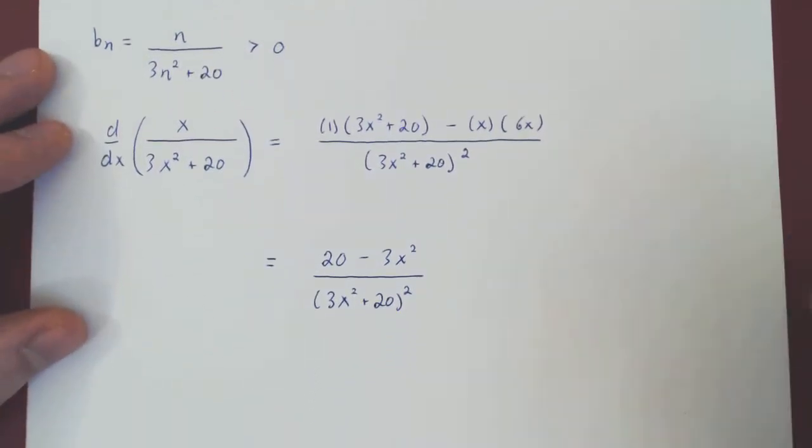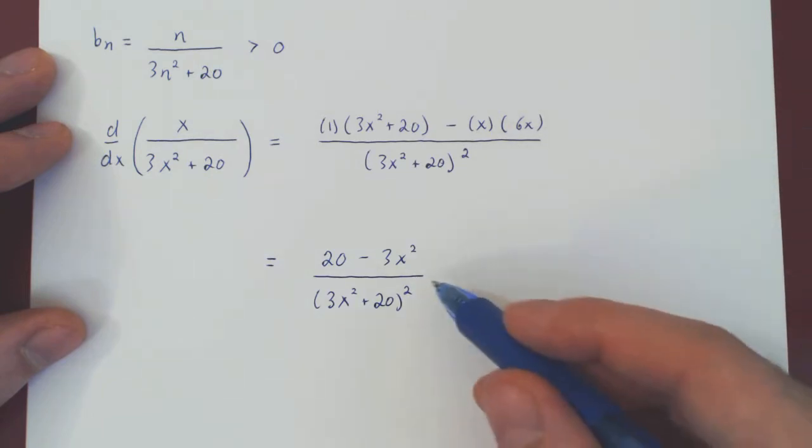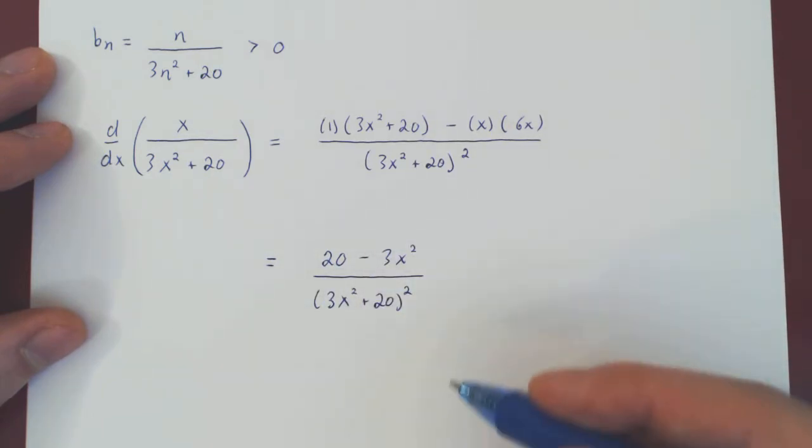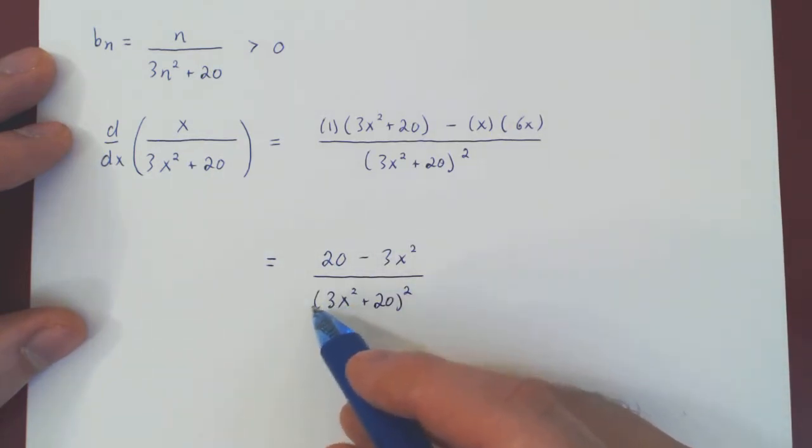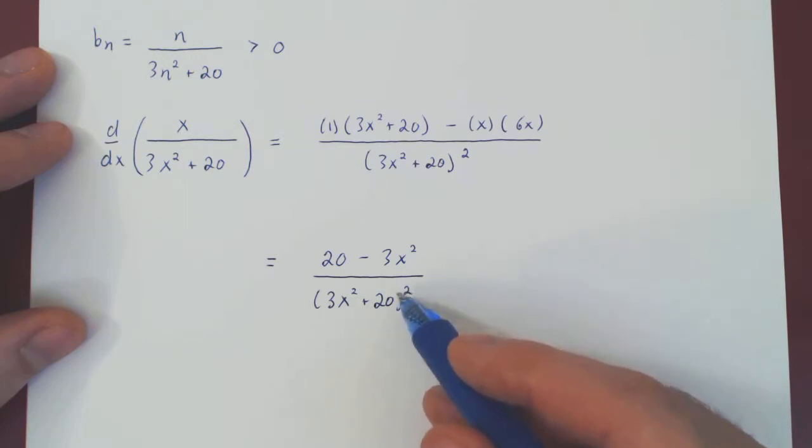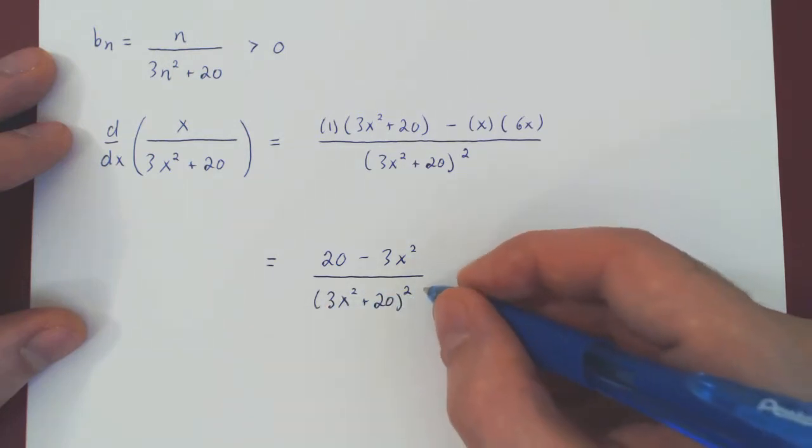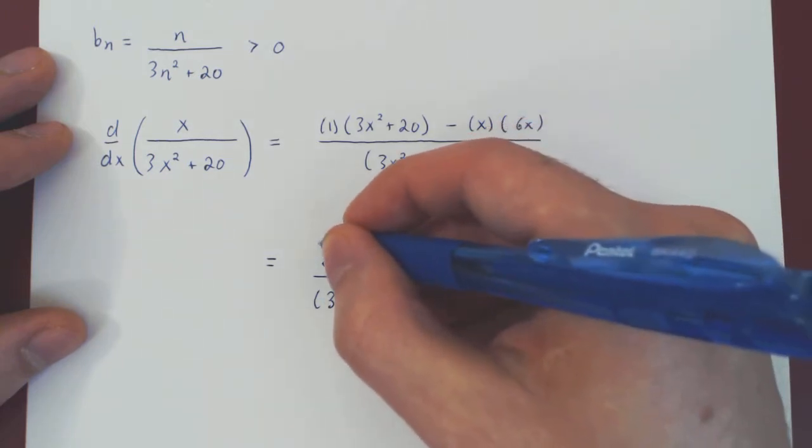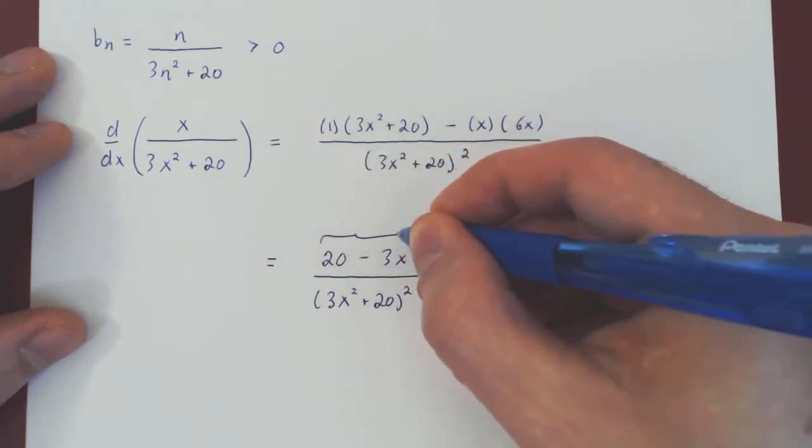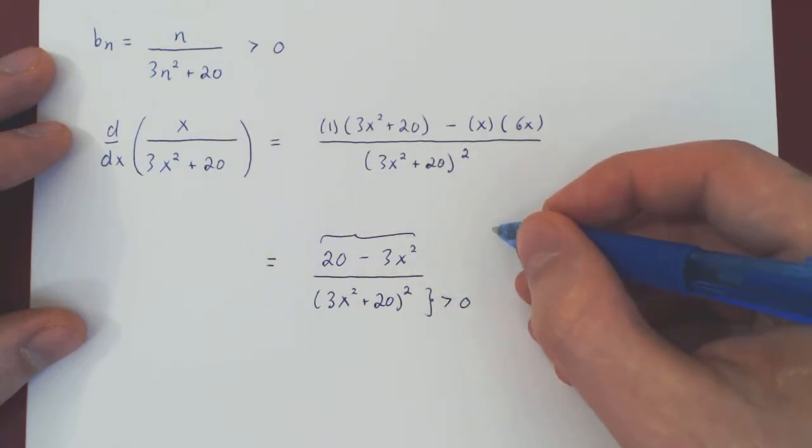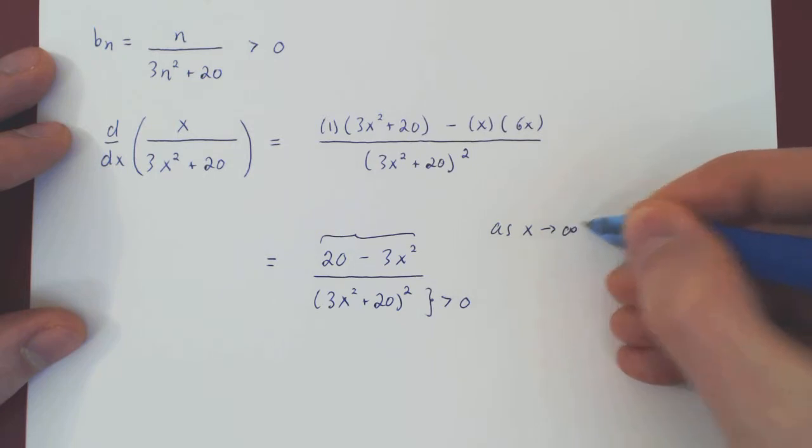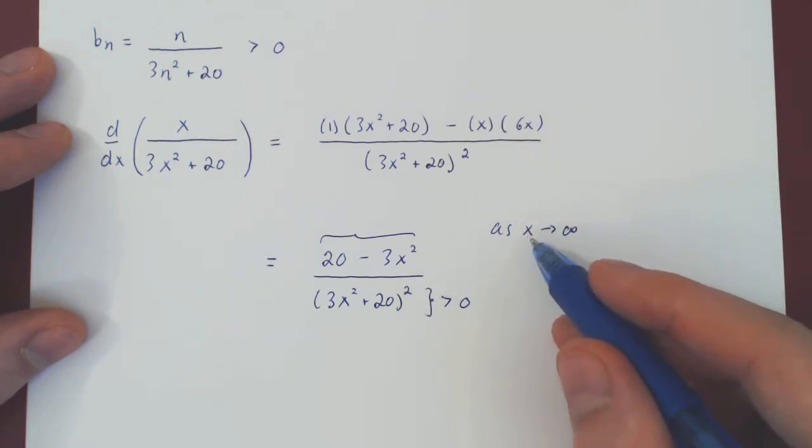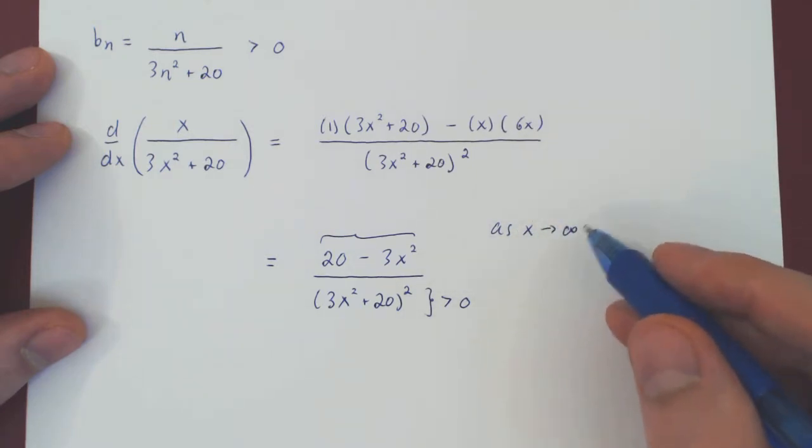And now we're asking, if x is large enough, will the derivative be negative? Well, if you look at your denominator, it's a square, so it's always positive. So this will not affect the sign of the fraction. And now look at your numerator. As we let x approach positive infinity, so as we let x become bigger and bigger, clearly 20 minus 3x squared will approach negative infinity, which is clearly negative.